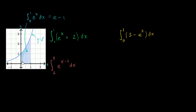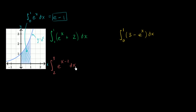This blue area right over here we can denote as the definite integral from zero to one of e to the x dx. We know that area is equal to e minus one. Given that, I have these other three definite integrals, and I encourage you to pause this video and try to evaluate them using only this information and what we already know about definite integral properties.